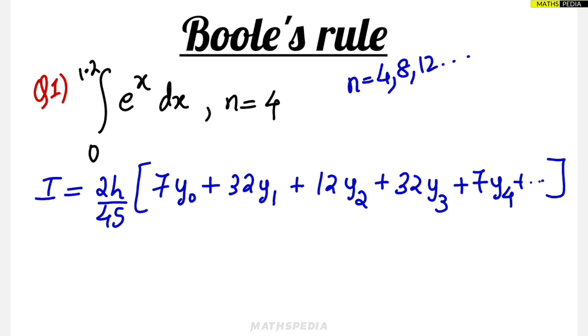Next is to find the h value. Before that, just compare with the standard form, a to b y dx. Now y is nothing but the function of x, so here the function is e^x.